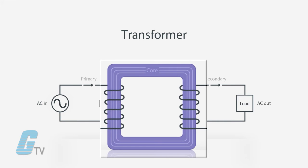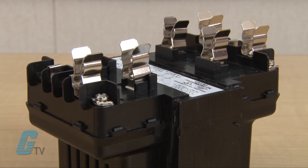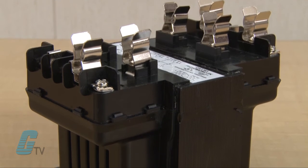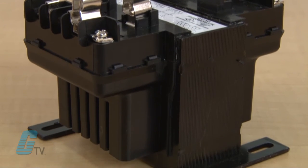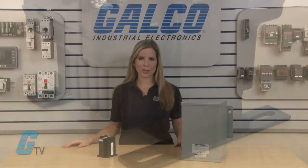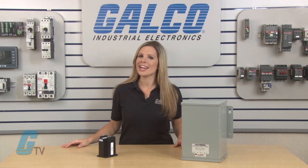The transformer core is used to provide a controlled path for the magnetic flux generated in the transformer. The core is generally a construction of many thin laminated steel sheets or layers. This construction is used to help eliminate and reduce heating.